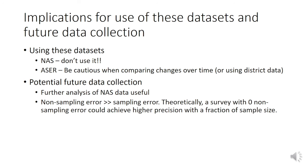The second big implication is that even for ACER, the non-sampling error is much larger than the sampling error. So theoretically, if you had a household survey that achieved zero non-sampling error, you could achieve similar levels of precision to ACER with a fraction of the sample size. Thank you very much.